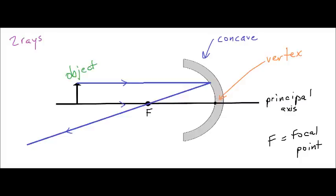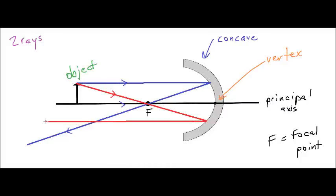Then we're going to have a second ray, shown with a red line. This second ray is going to go through the focal point, hit the concave mirror, and reflect such that it is perpendicular — that is, parallel — to the principal axis, going in this direction.